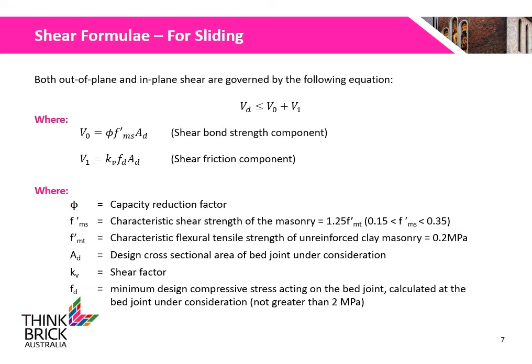In these equations, phi is the capacity reduction factor; F-MS is the characteristic shear strength of the masonry; F-MT is the characteristic flexural tensile strength of the unreinforced clay masonry; AD is the design cross-sectional area of the bed joint under consideration; KV is the shear factor; and FD is the minimum design compressive stress acting on the bed joint.